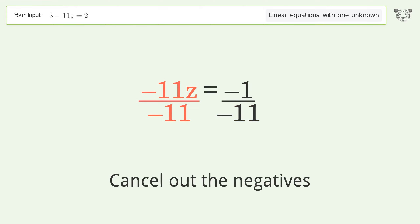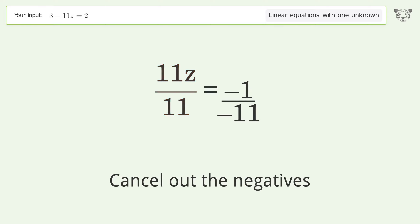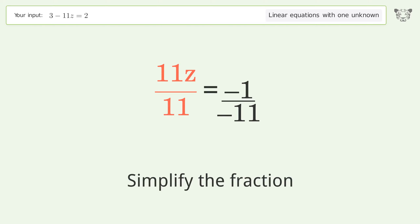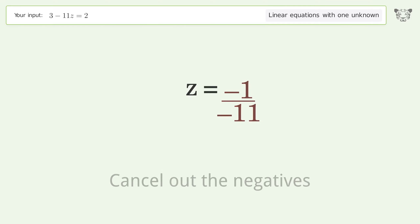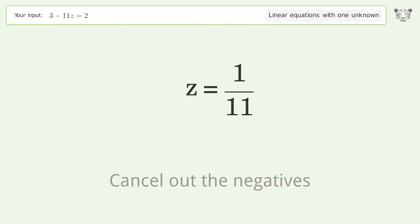Cancel out the negatives, simplify the fraction, and cancel out the negatives again. The final result is z equals 1 over 11.